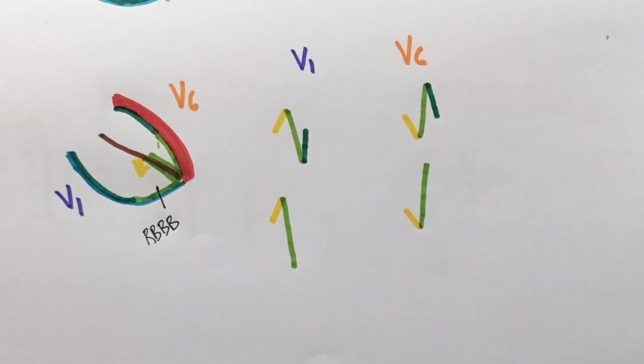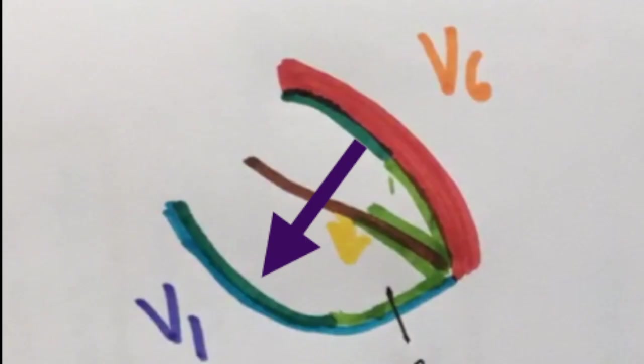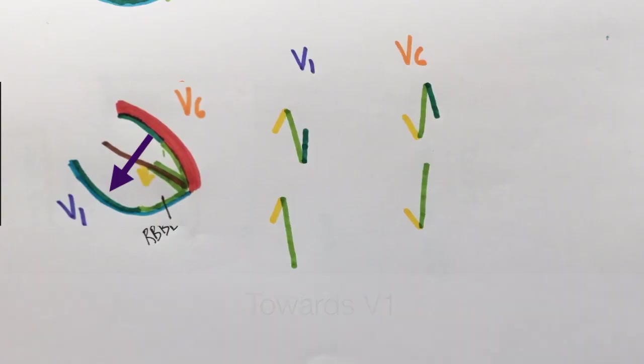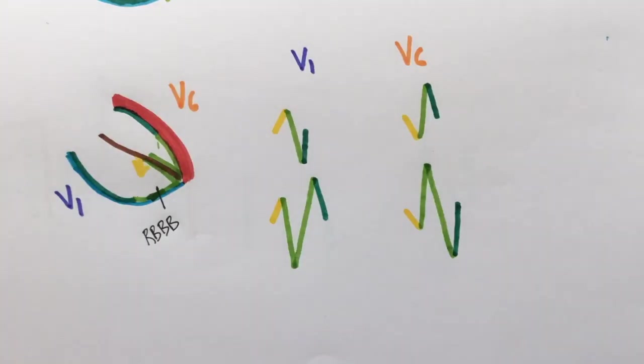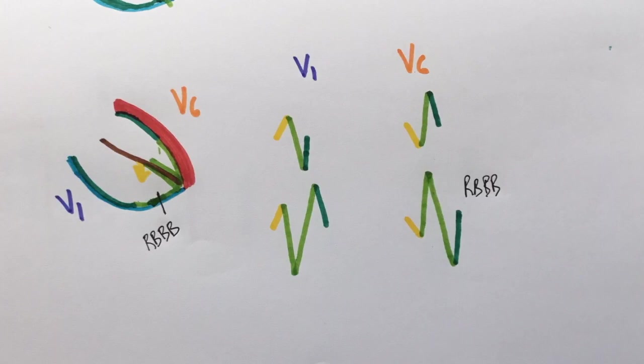Eventually, the impulses travel to the right ventricle in this direction. This is towards V1 and away from V6. So a positive deflection is seen in V1 and a negative deflection is seen in V6. After complete depolarization, the waves will come back to normal.